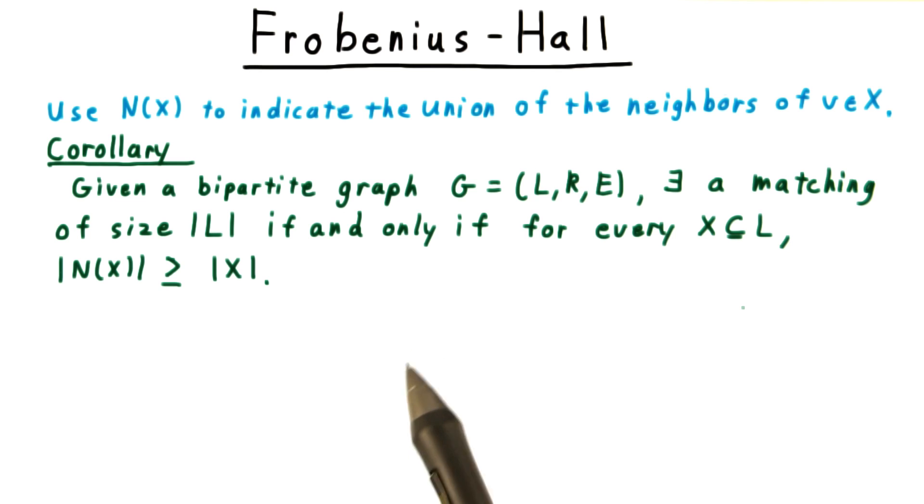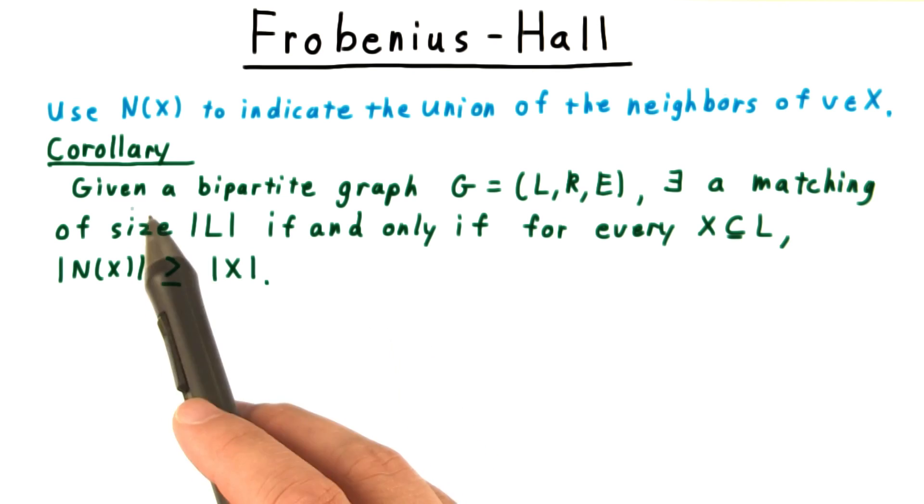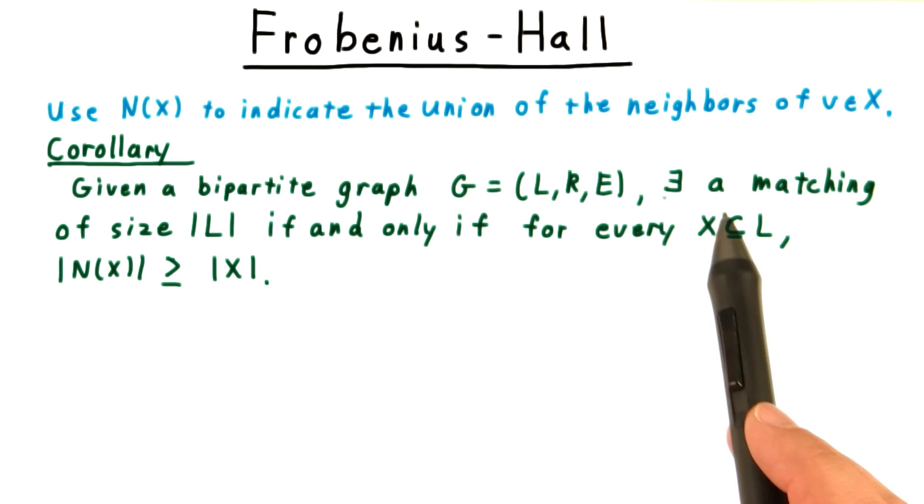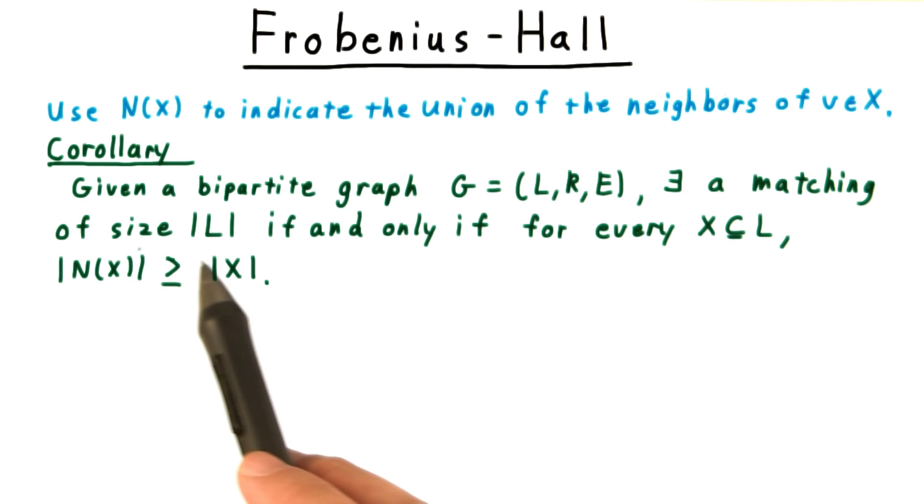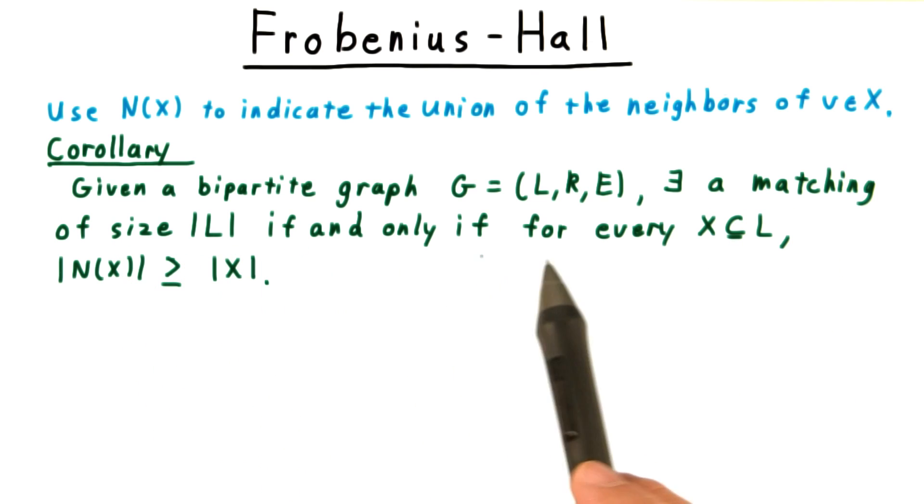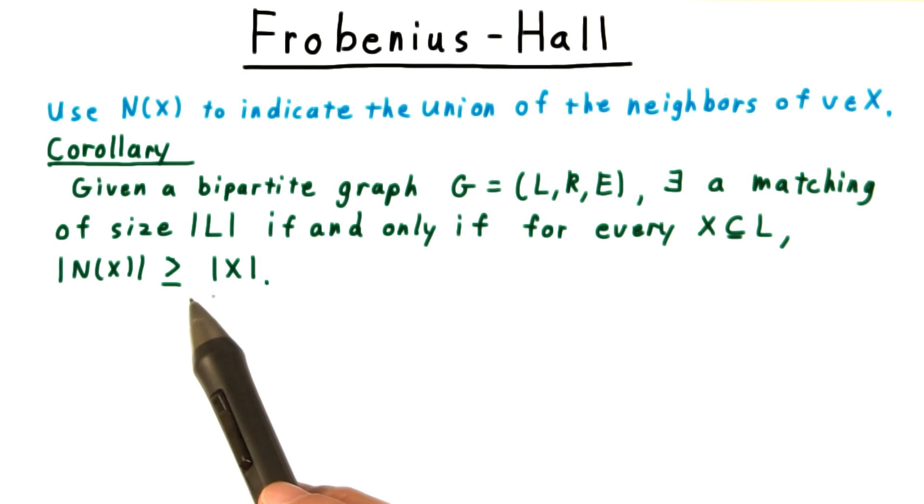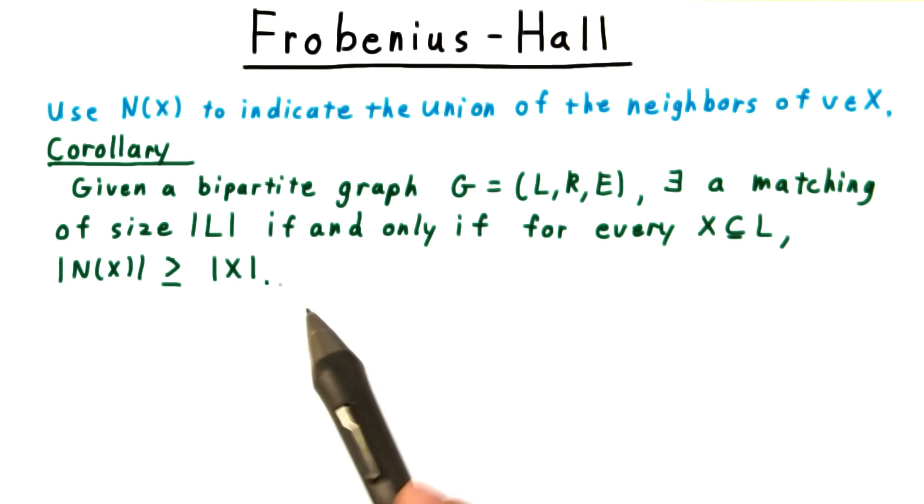We can make this intuition precise with the Frobenius-Hall theorem, which follows from the max matching min vertex cover argument. Given a bipartite graph G partitioned into L and R, there exists a matching of size |L| if and only if, for every x which is a subset of L, the size of the neighborhood of x is at least the size of x.